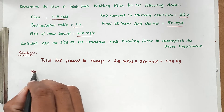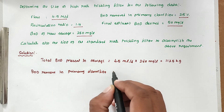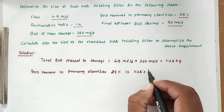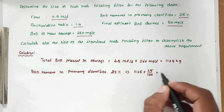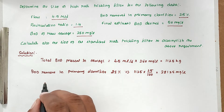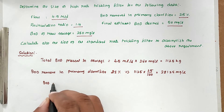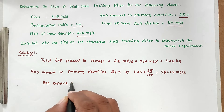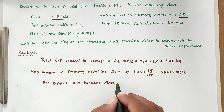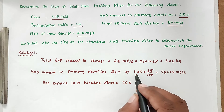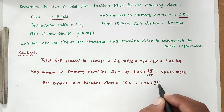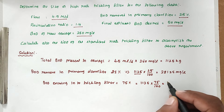Next, the BOD removed in the primary clarifier: 1125 into 25 divided by 100 gives 281.25 kg. Then the BOD entering the trickling filter: 1125 into 75 divided by 100 gives 843.75 kg.